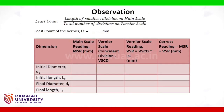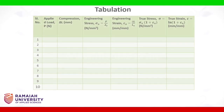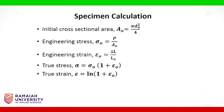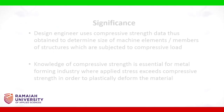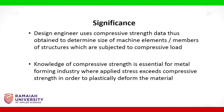Specimen observation and specimen tabulation are carried out, and the relevant equations are used. The design engineer uses compressive strength data thus obtained to determine the size of machine elements or members of structures which are subjected to compressive load. Knowledge of compressive strength is essential for the metal-forming industry where applied stress exceeds compressive strength in order to plastically deform the material.